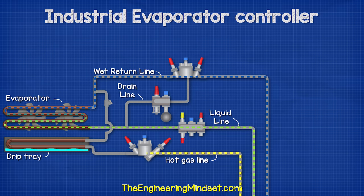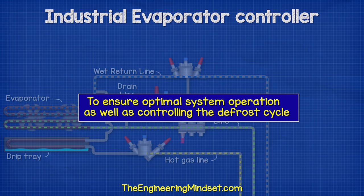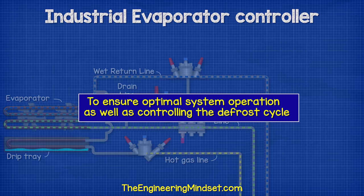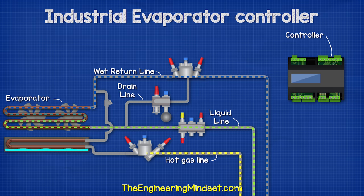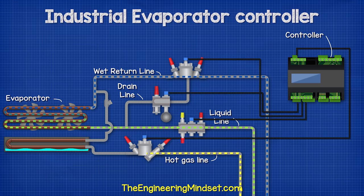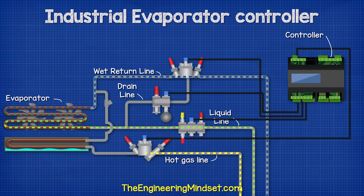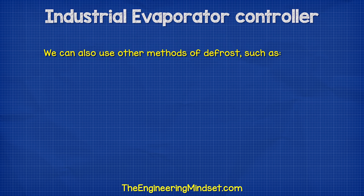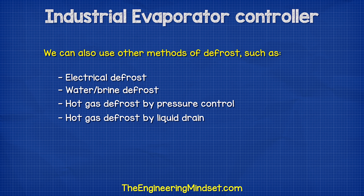Now we need to be able to control all of these valves as well as other components, allowing optimal operation of the system and controlling the defrost cycle. The controller is installed and we connect to the solenoid valves in each of our valve stations — on the liquid line, wet return line, the hot gas line, and the drain line. This allows us to automatically control the position of each valve during normal operation and the defrost cycle. We can also use other defrost methods such as electrical defrost, water and brine defrost, or hot gas defrost by pressure control or liquid drain.